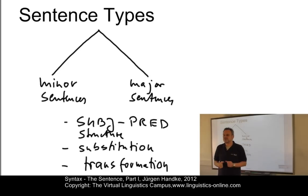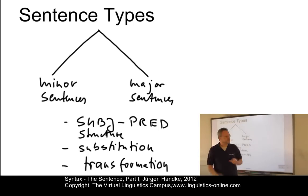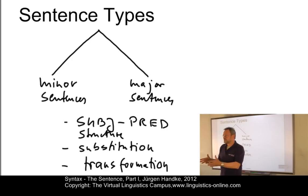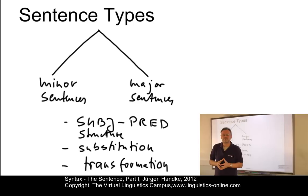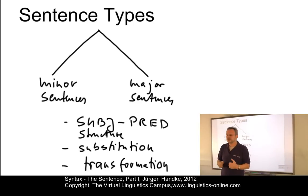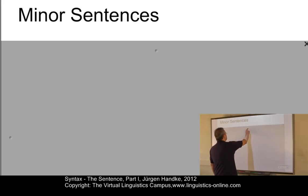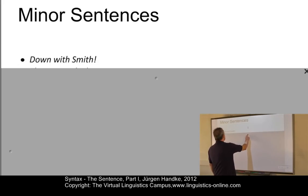These are the three criteria which we are going to apply. In addition to these two types of sentences — the minor and major — there are major sentences that are incomplete. They are referred to as elliptical sentences and will be dealt with later. Let's first of all look at minor sentences. Here we have some examples.